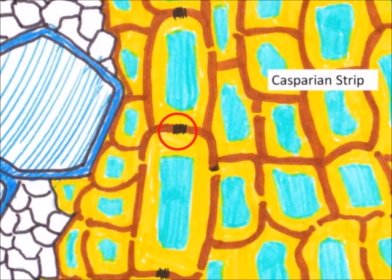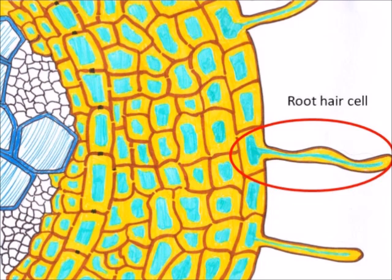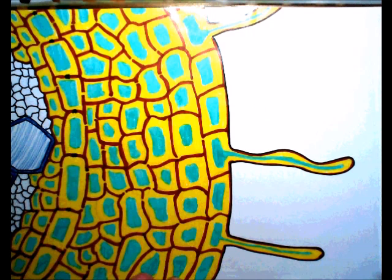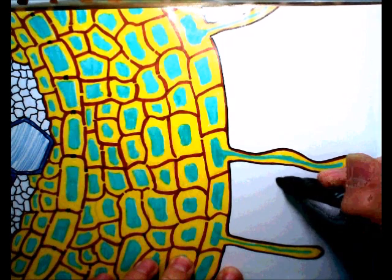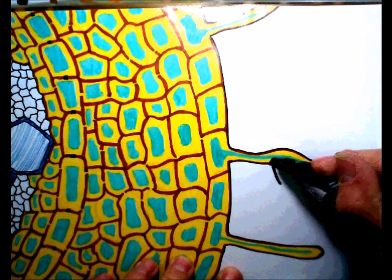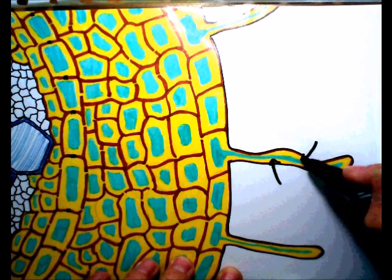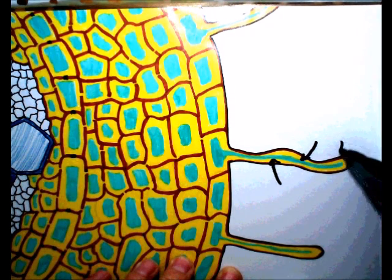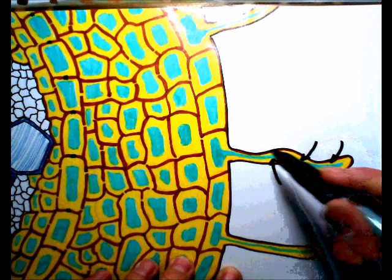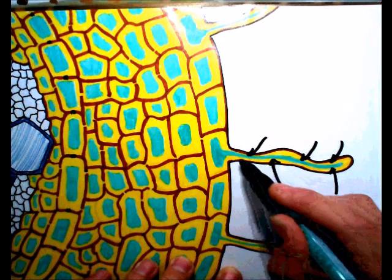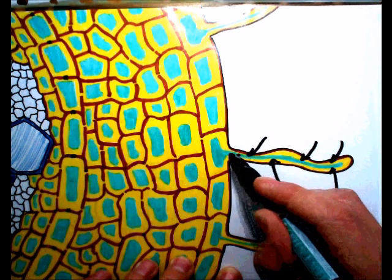Starting back at the root hair cell. Water is going to travel into the root hair cell by osmosis, because the water potential in the soil is going to be close to zero, and the water potential in the root hair cell is going to be more negative than that. So water will transfer across the membrane.